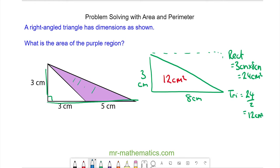And you can see the purple region is formed by the big right angle triangle take away this small one highlighted in blue. So we can work out the area of the smaller right angle triangle which is 3 by 3.